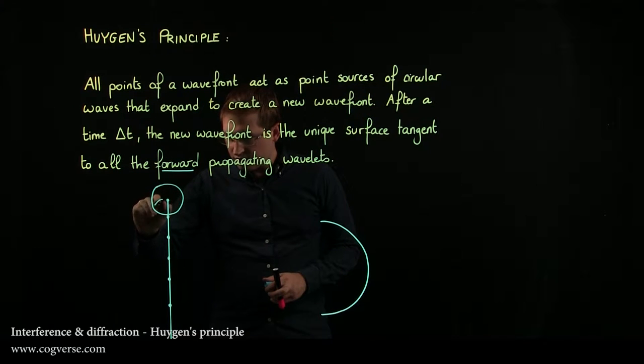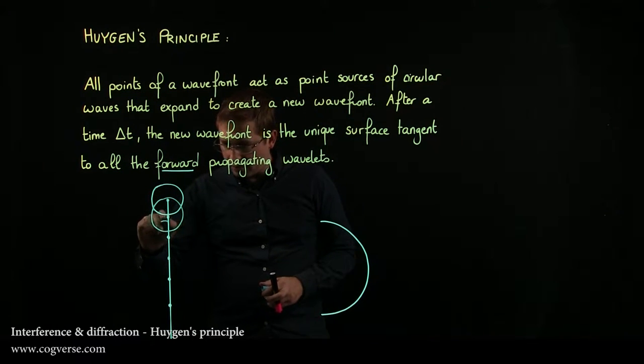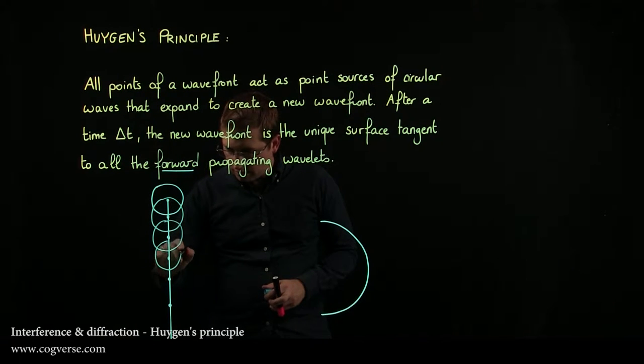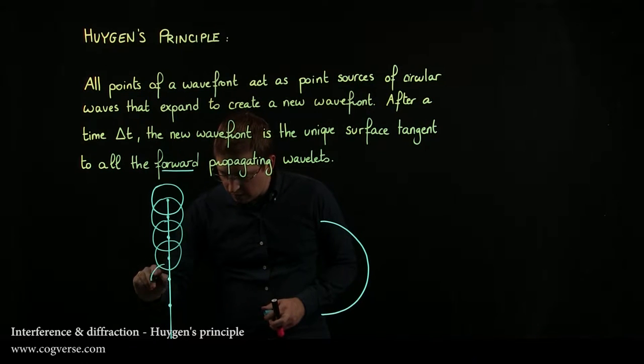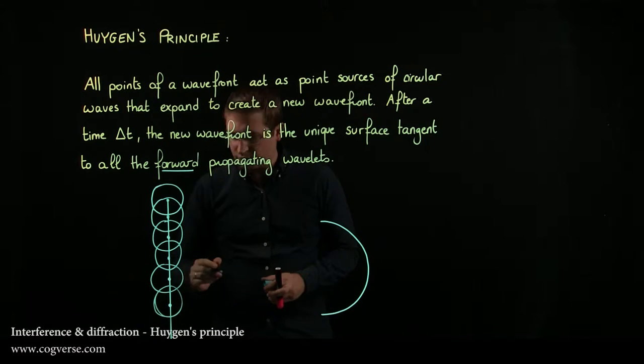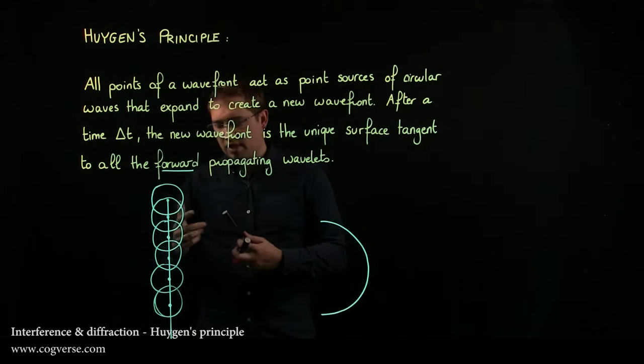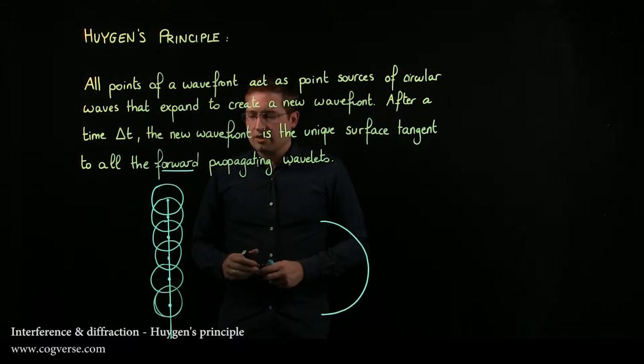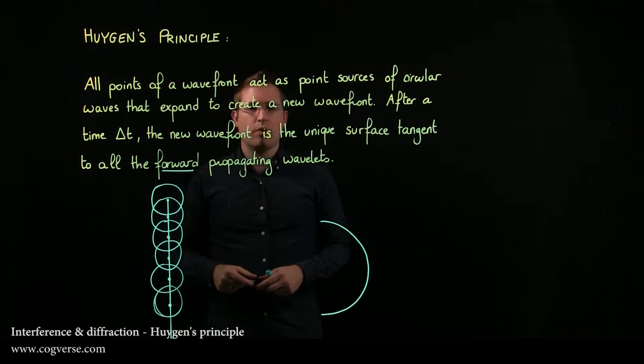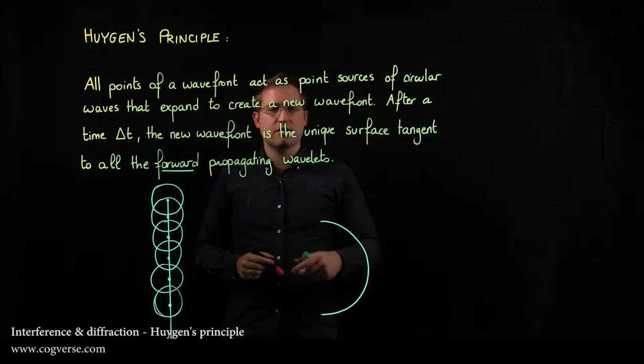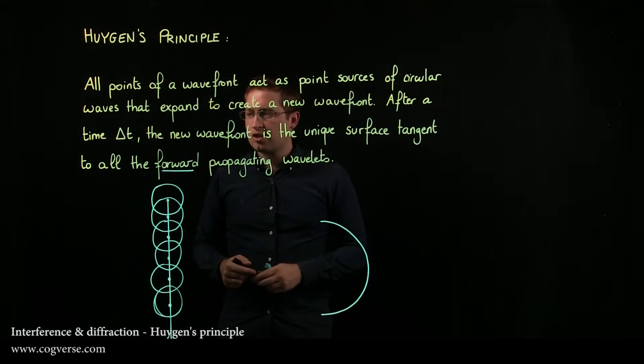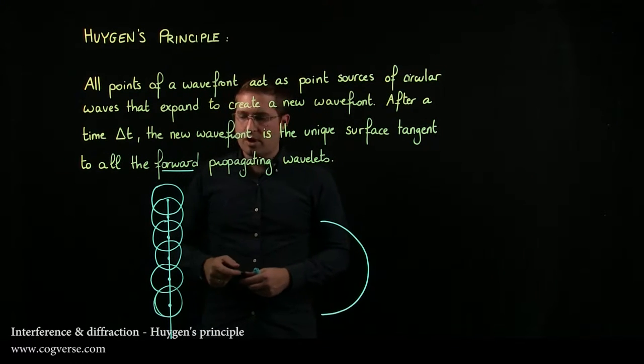The next one does too, of course. The next one does too, and so on and so forth. Each point of the wavefront acts as a source of circular waves, and my circles are not great but bear with me, because now I'm going to draw the new wavefront. The new wavefront is the unique surface tangent to all the forward propagating wavelets.